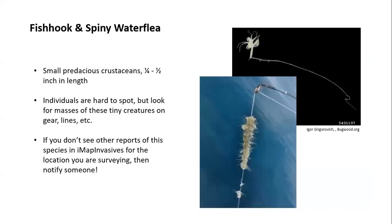Fish hook water flea and spiny water flea are two different species but really hard to tell apart. They are very tiny — small, predaceous crustaceans that only get about a quarter to half an inch in length. They're pretty translucent and individuals are hard to spot. But when they clump together in masses on fishing lines or other gear, you really start to notice them. That lower picture shows a cluster of them on a fishing line. Similar to the mystery snail, report this in iMapInvasives, and if there are no prior reports in that area, notify someone.